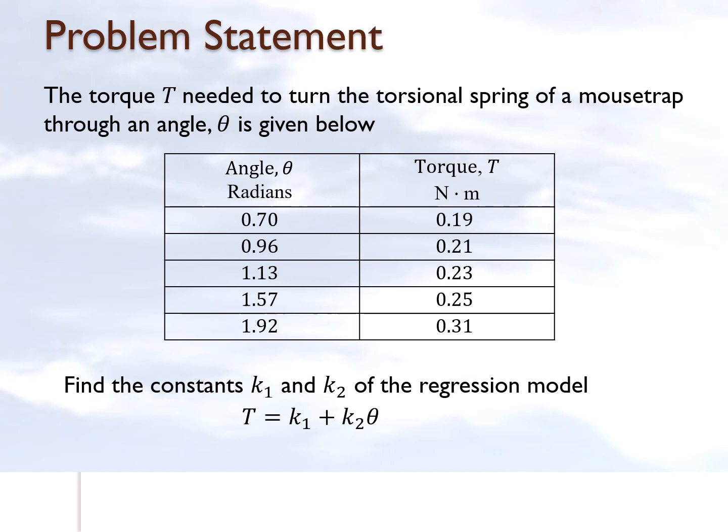We are basically given the torque which is required to open up a torsional spring of a mousetrap through a certain angle. So as you start from zero degrees, the amount of torque which is required to open it will keep on increasing.